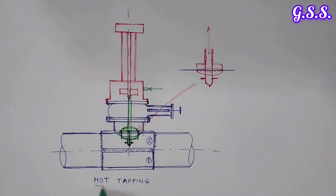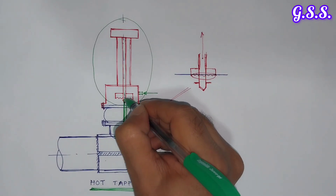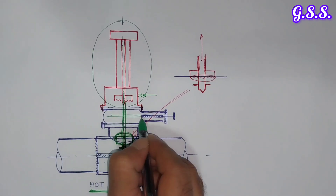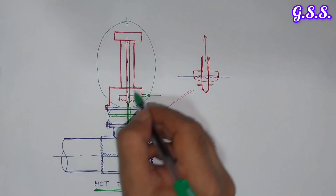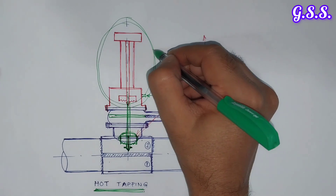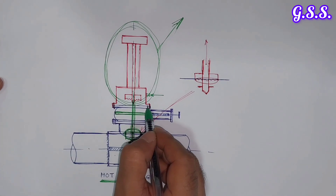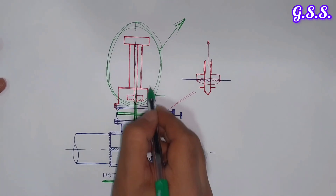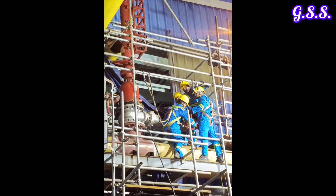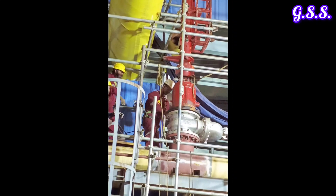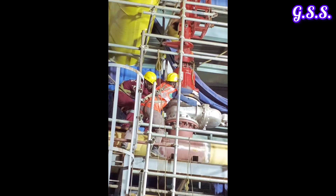After the hot tapping operation is completed and the drill bit is taken upward, the gate valve is closed. Then the entire hot tapping machine is removed from the system and the connected pipeline will be connected at this flange point in future. Now hot tapping is done and the gate valve is being closed. After closing the isolation gate valve, the entire hot tapping machine is being dismantled from the system.